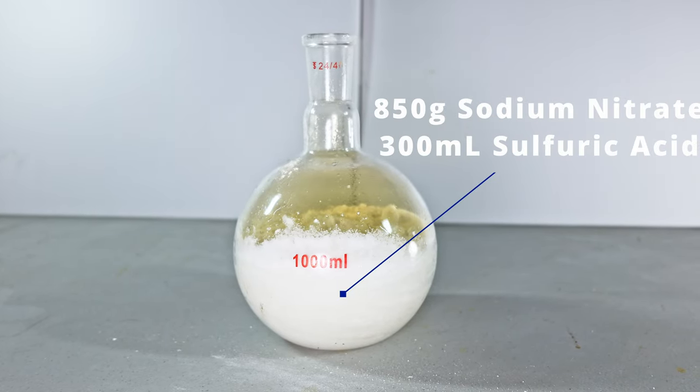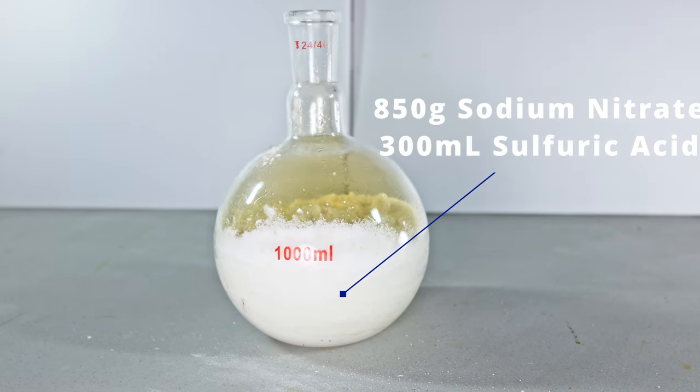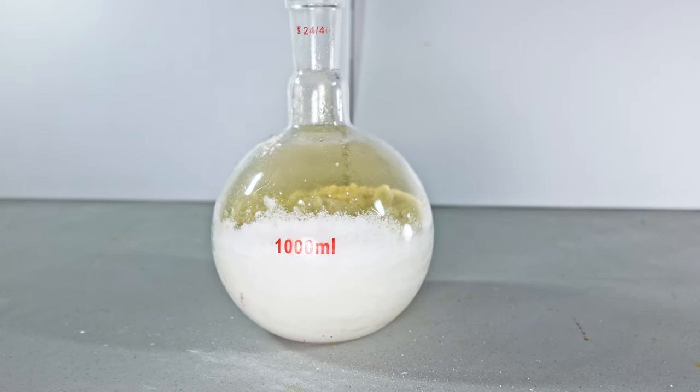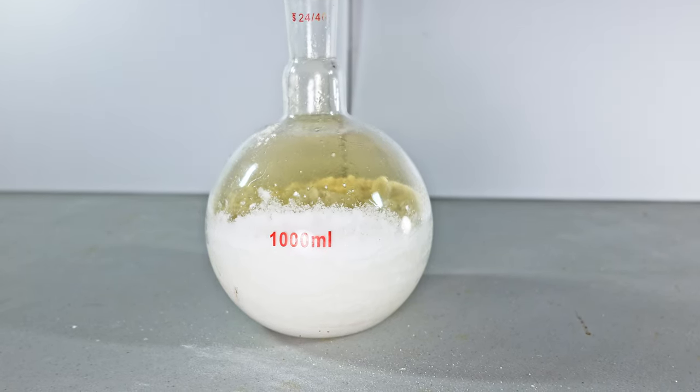After you've added your sodium nitrate and your sulfuric acid, you're going to notice this little yellow brown haze over there. That's actually some of the nitrogen dioxide being released because this reaction is already going. Now we just have to heat it up to get our nitric acid.